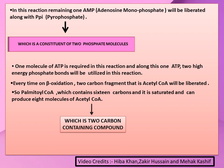One molecule of ATP is required in this reaction, and two high-energy phosphate bonds are utilized. Upon each cycle of beta oxidation, two carbon fragments in the form of acetyl-CoA are liberated. For 16-carbon palmitoyl-CoA, which is saturated, eight molecules of acetyl-CoA are synthesized during this process. The initial step is the conversion of the fatty acid into its fatty acyl-CoA derivative.